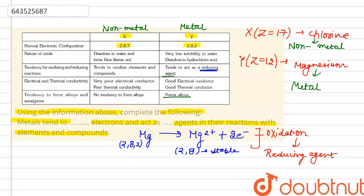Therefore we can complete the given sentence as: Metals tend to donate electrons and act as reducing agent in their reaction.